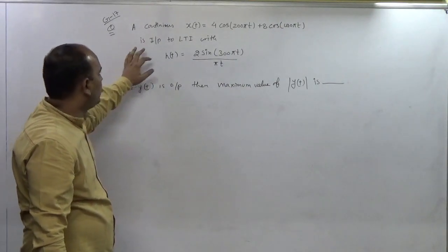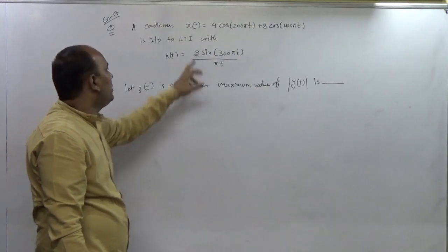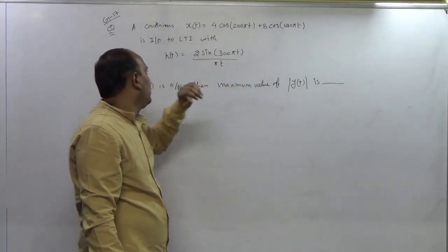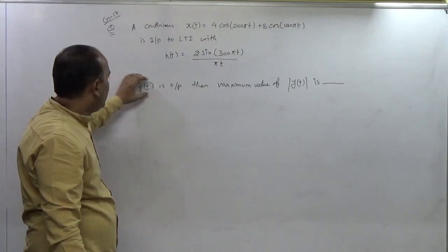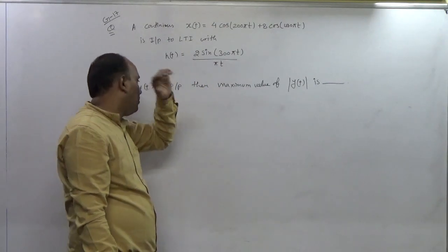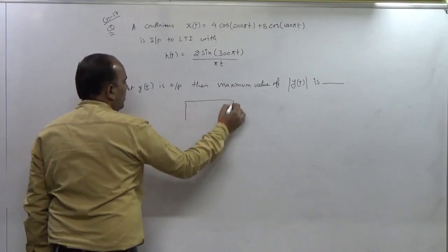Our next question is Gate 17. We are having one LTI system and our input is Xt equals to this much and this is impulse response of the system and Yt is the output. We have to find out the maximum value of the mod of Yt. So the first thing is this is just an LTI system, that is Xt.